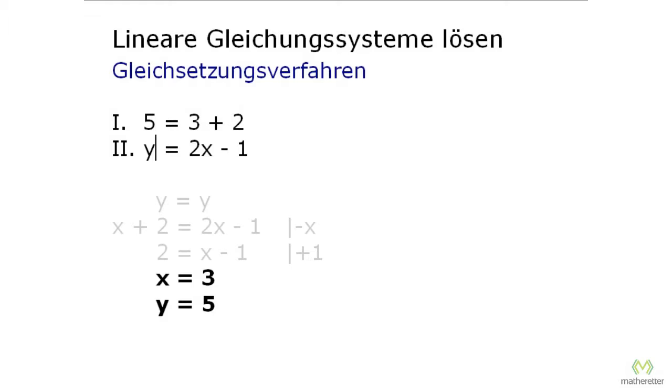And if you are unsure then you can try putting the values in here. x is 3, y is 5, x is 3, and if you figure it out, you find that here is 5 equals 5 and here is 5 equals 5. Both are true.